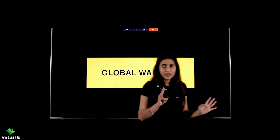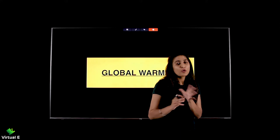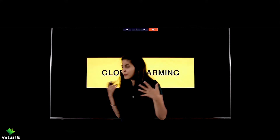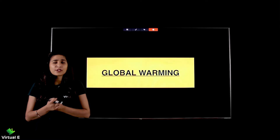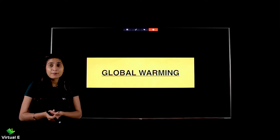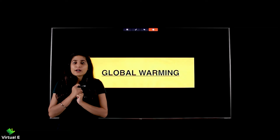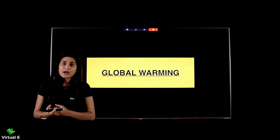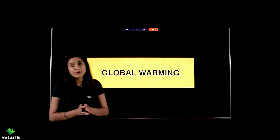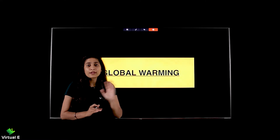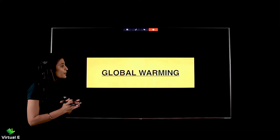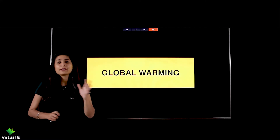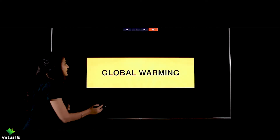Moving to the third thing which is global warming — a very important issue today. We hear about global warming a lot. Why? Because of the pollution that we are creating, the harm that we are giving to the environment. We create a lot of pressure on the environment, which is why global warming occurs. In this topic we are going to cover: what is global warming, what are the causes, and what can be done to prevent it.